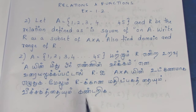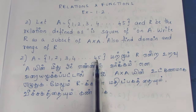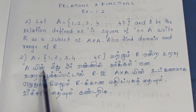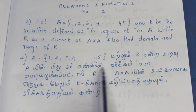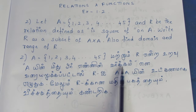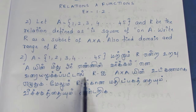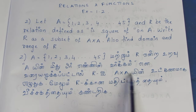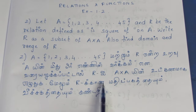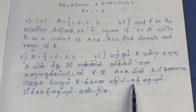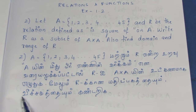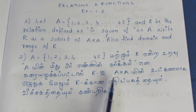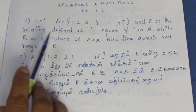So this is the question. A is the set up to 45, and we have to find the domain and range of R. The domain comes from the first element of each pair, and the range from the second. Let's now go through the pairs.